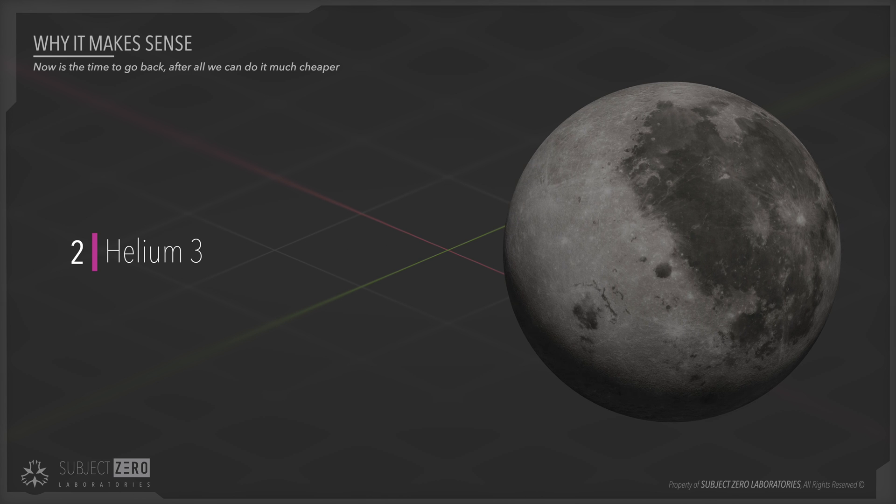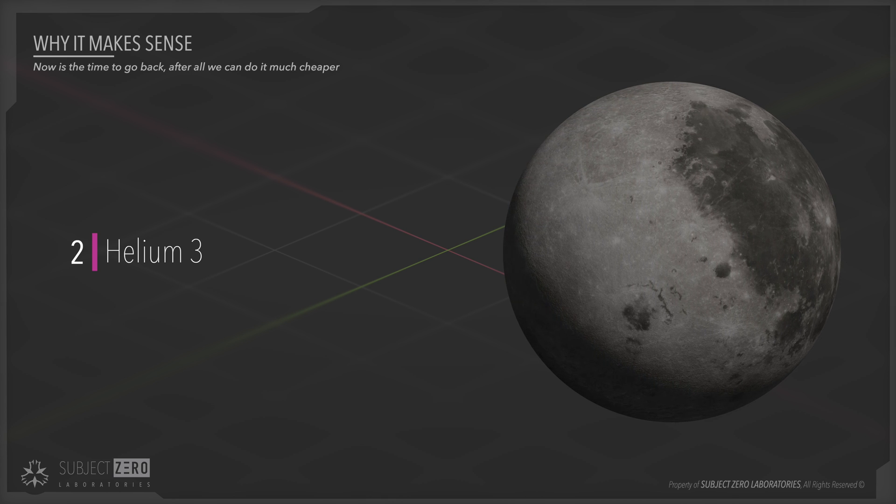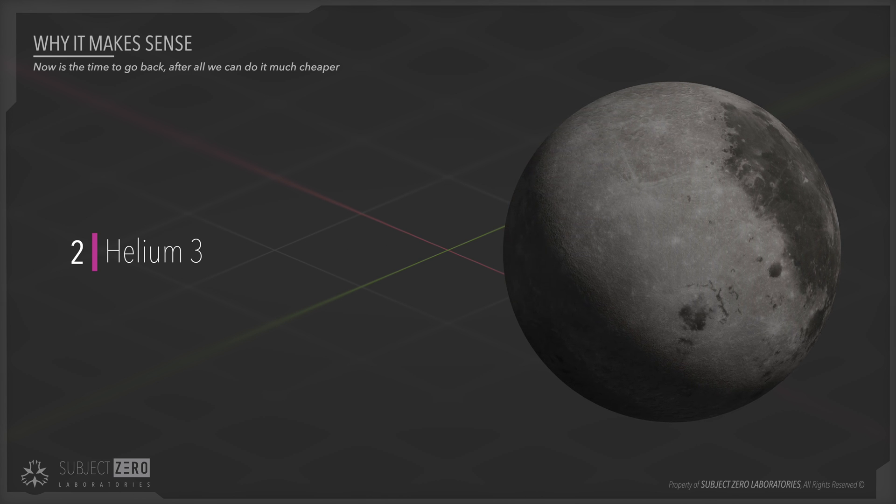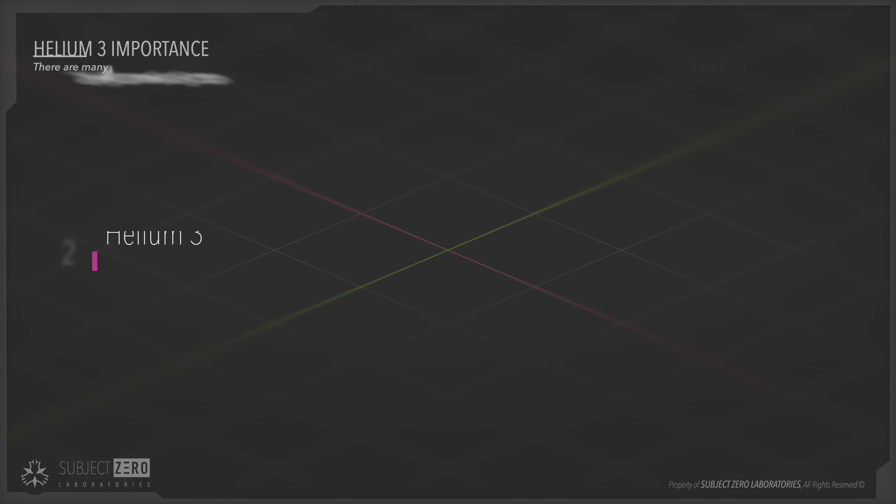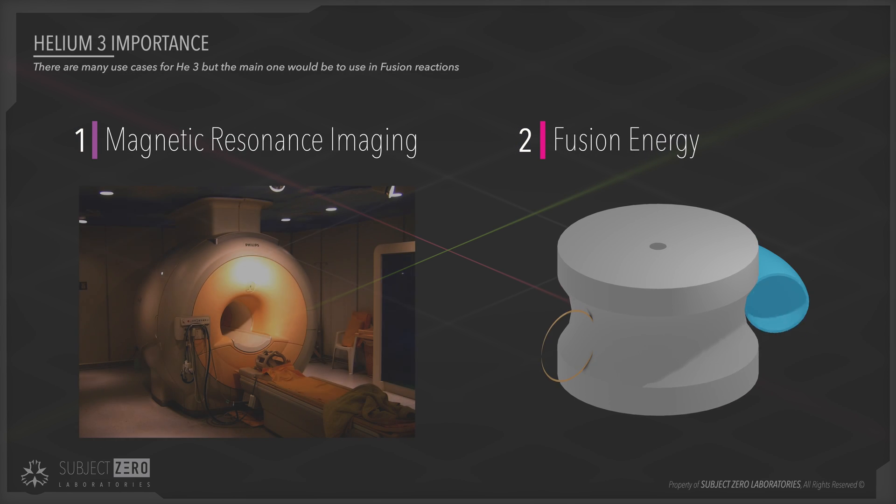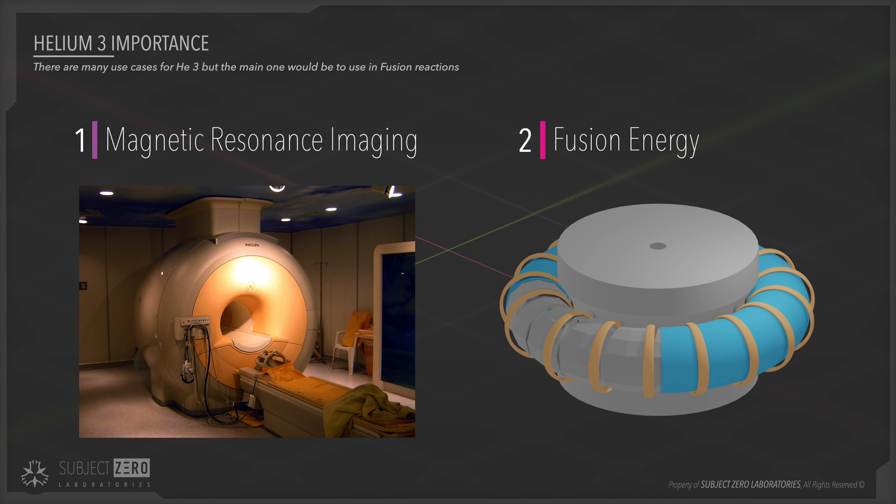Helium-3 has a long list of use cases for humanity, but among the top is the use for fusion reactors and medical applications. Since we are far away from fusion, the main reason to mine this element would be for medical stuff. Just as an example, it would be used for the MRI, where helium is used as one of the best cooling elements for these machines.